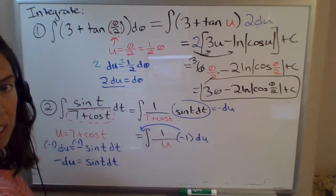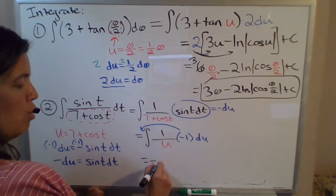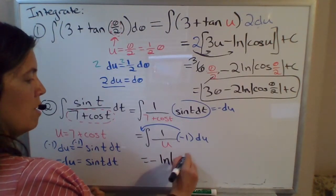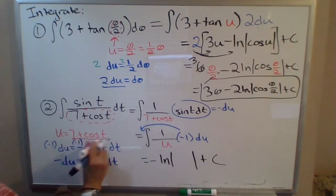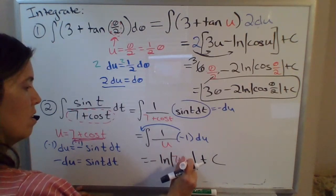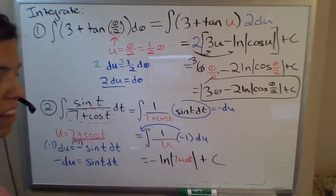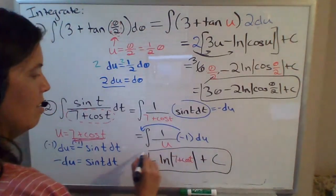So we can bring this negative 1 out front. And then you've got just the integral of 1 over u, which is natural log of the absolute value of u, where u is 7 plus cosine of t. I didn't leave myself enough room again. That's 7 plus cosine of t. And there's your final answer.